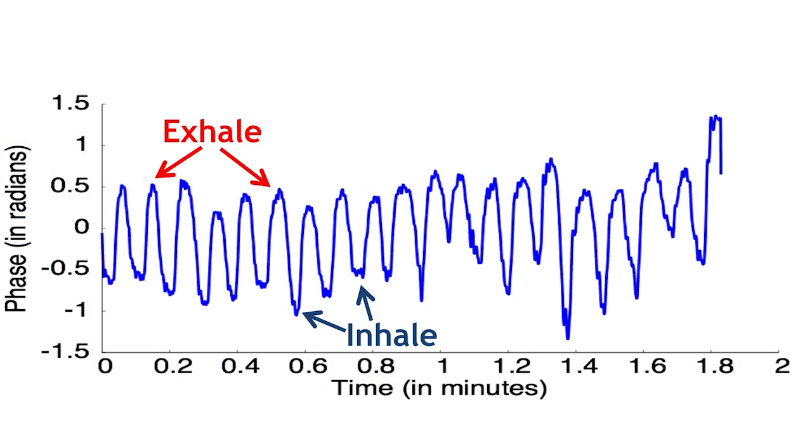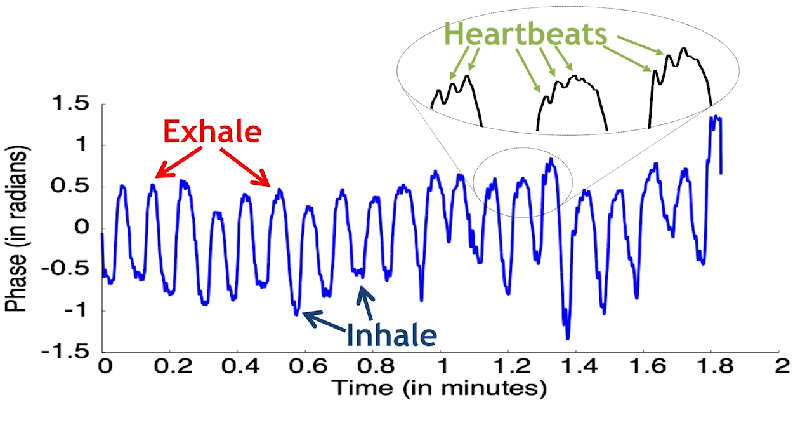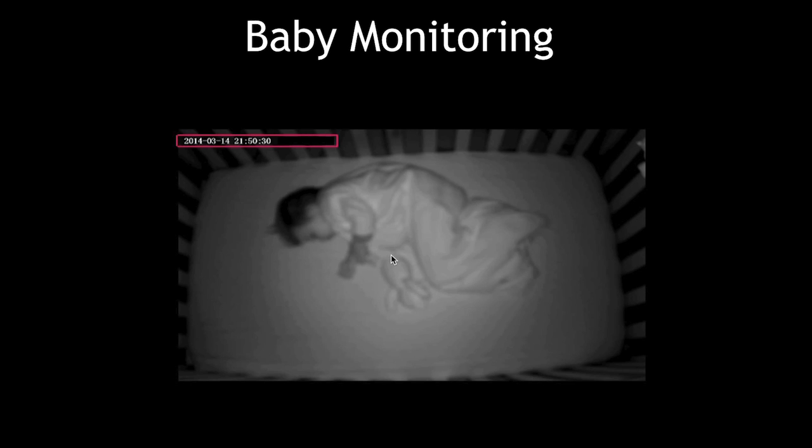So here, we see the inhale and exhale motion that I told you about. And we are going to take this portion and zoom in on it. These tiny oscillations on top of the breathing motion are actually due to the person's heartbeats. And the reason is that when the heart pumps blood, it creates a force that acts on different body parts and causes them to vibrate, and we can capture these vibrations from wireless reflections.